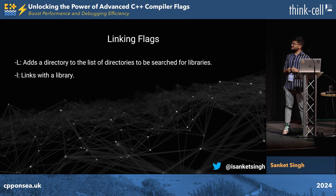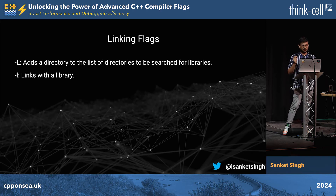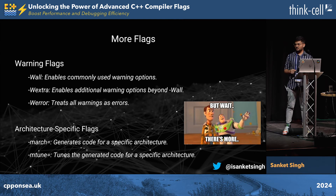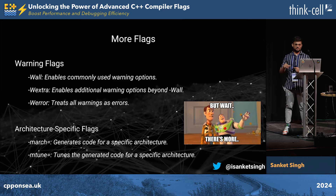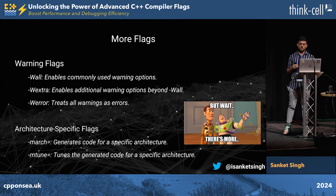Then there are some more flags called linking flags. The `-L` flag is going to add a directory to the list, and there's a `-I` flag that is going to link with the library altogether. Just like in one of the other lightning talks, we saw the `-Wall` flag, which is for commonly used warning options.